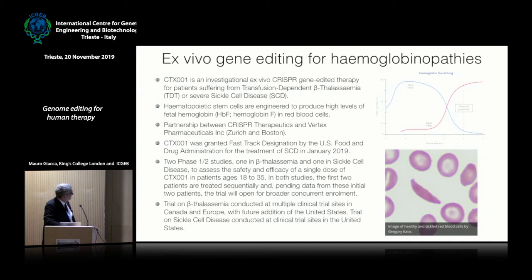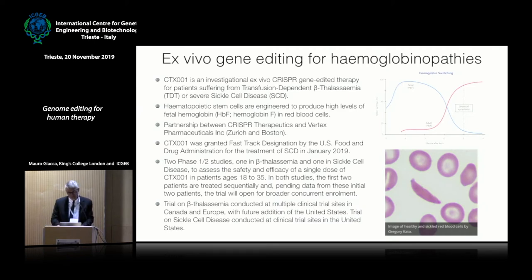This is a partnership between a biotech company in Zurich and one in Boston — CRISPR Therapeutics and Vertex Pharmaceuticals. The product is called CTX-001, which received fast track designation by the US FDA in January 2019. There are two phase one studies — one for beta-thalassemia and one for sickle cell disease — to assess safety and efficacy of a single dose in patients aged 18 to 35. Two patients have already been treated, and there was a release last week that the treatment is safe and there is molecular amelioration of the conditions.